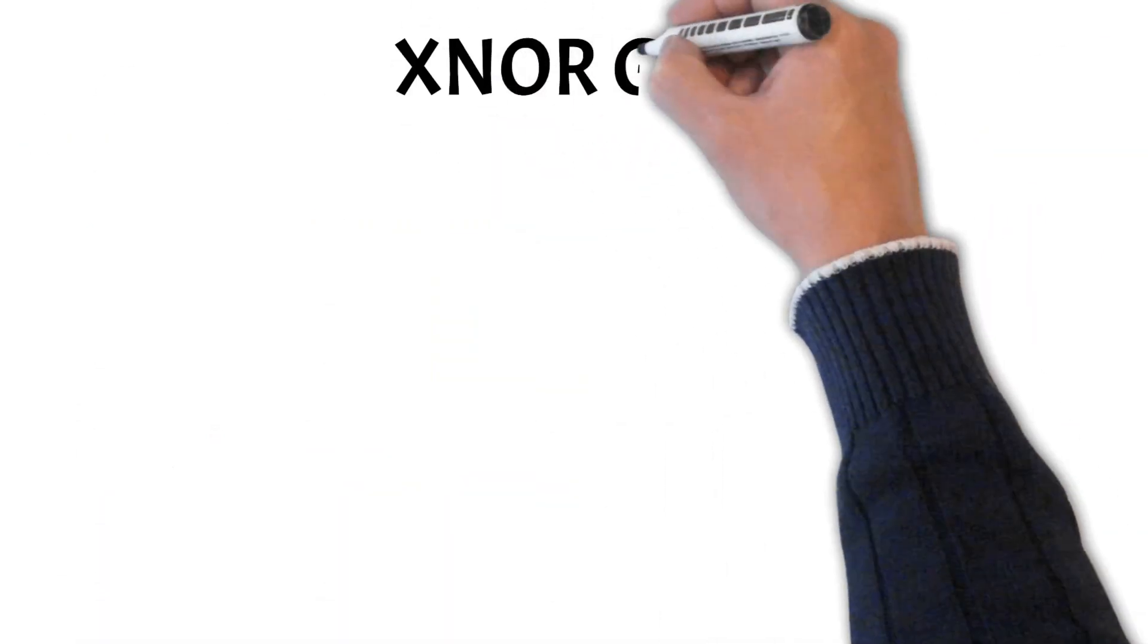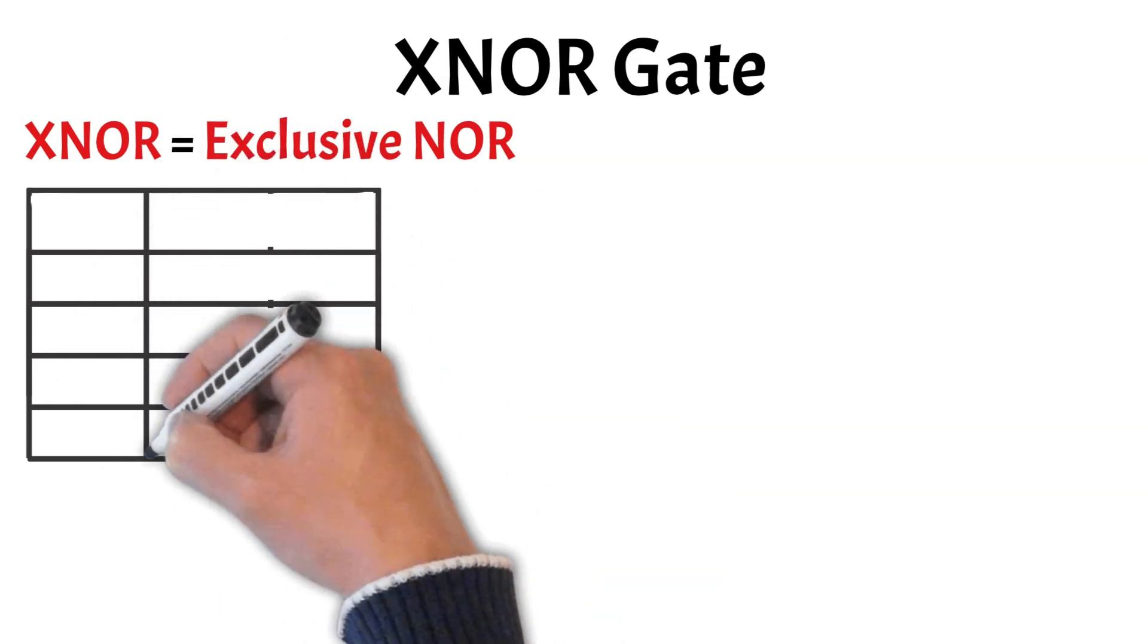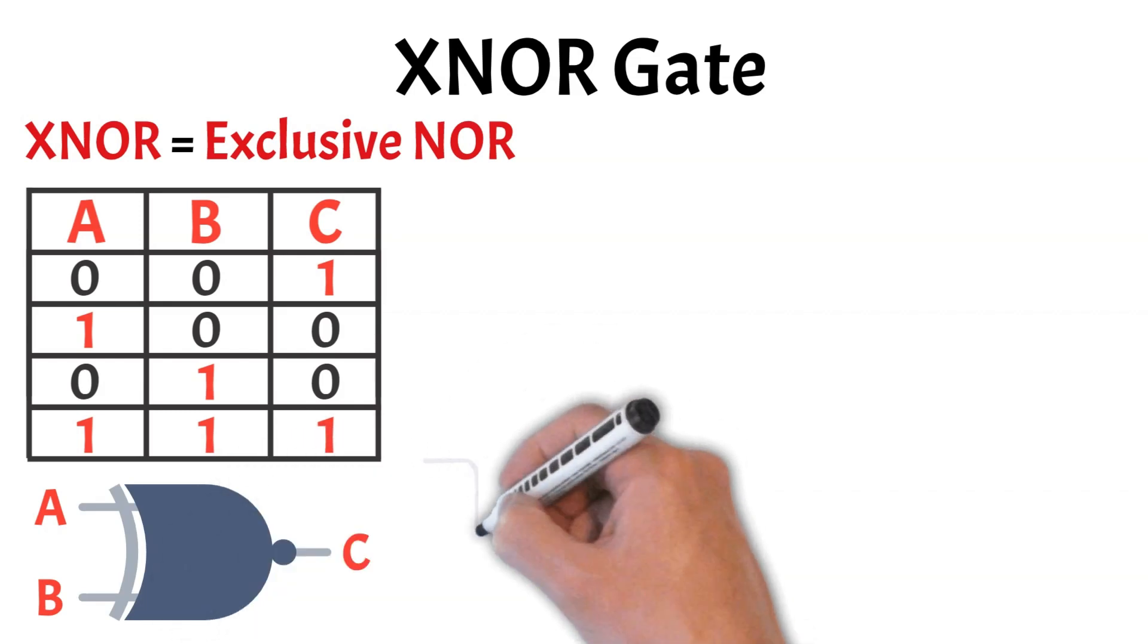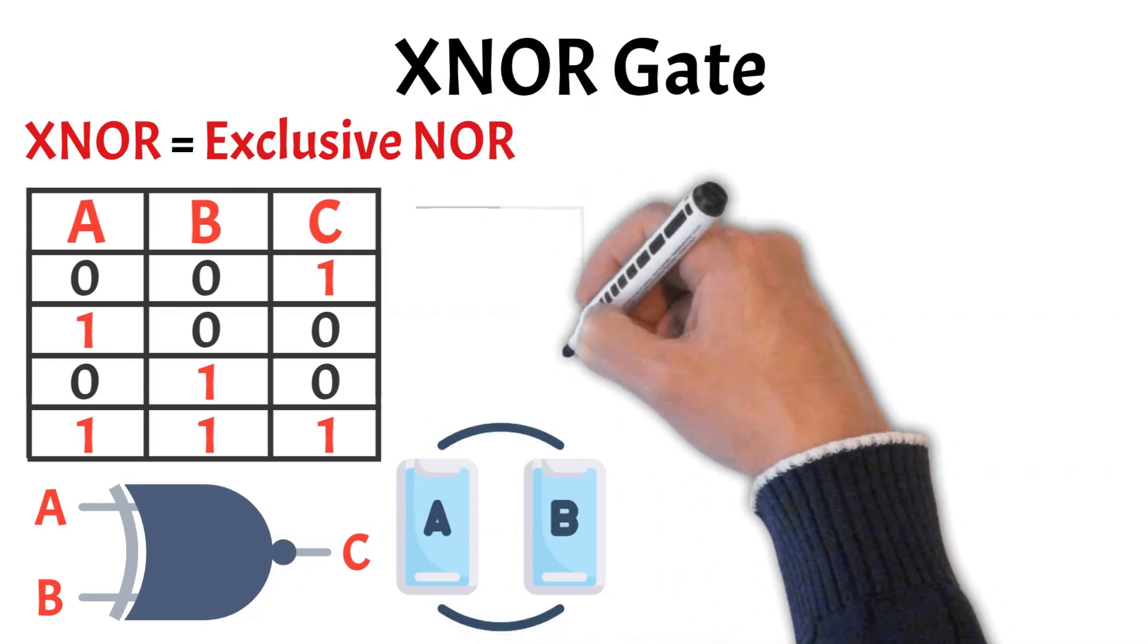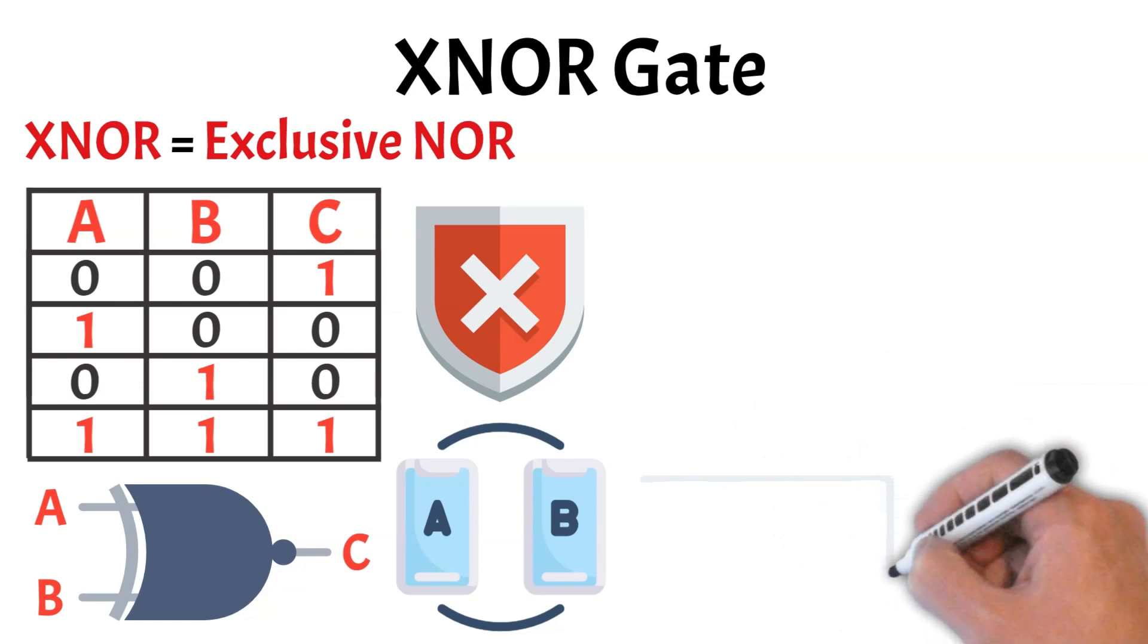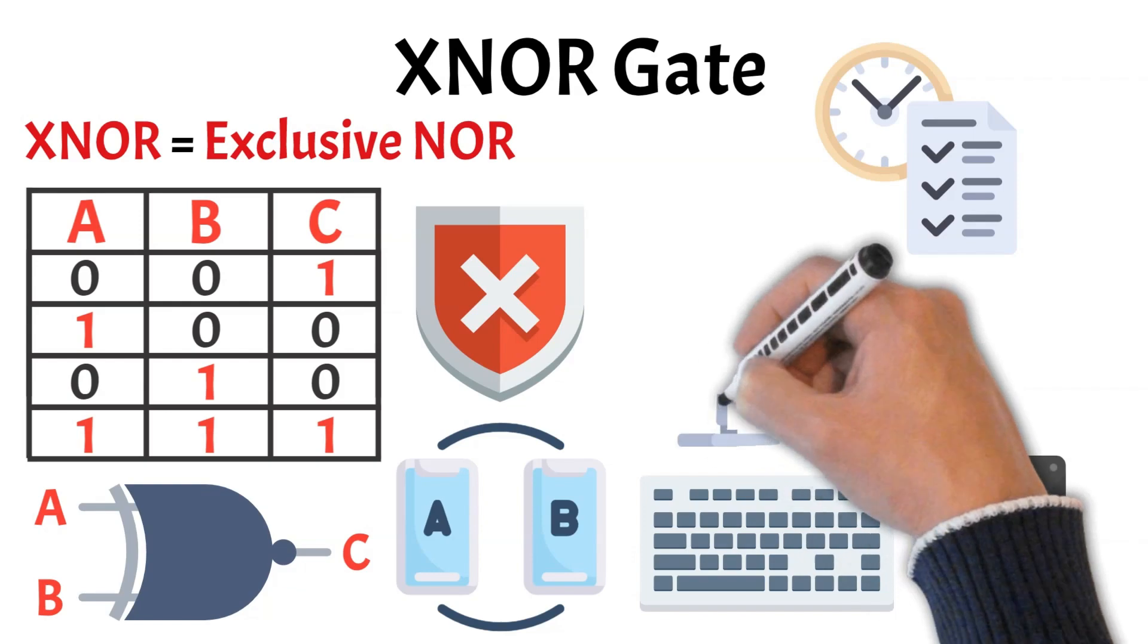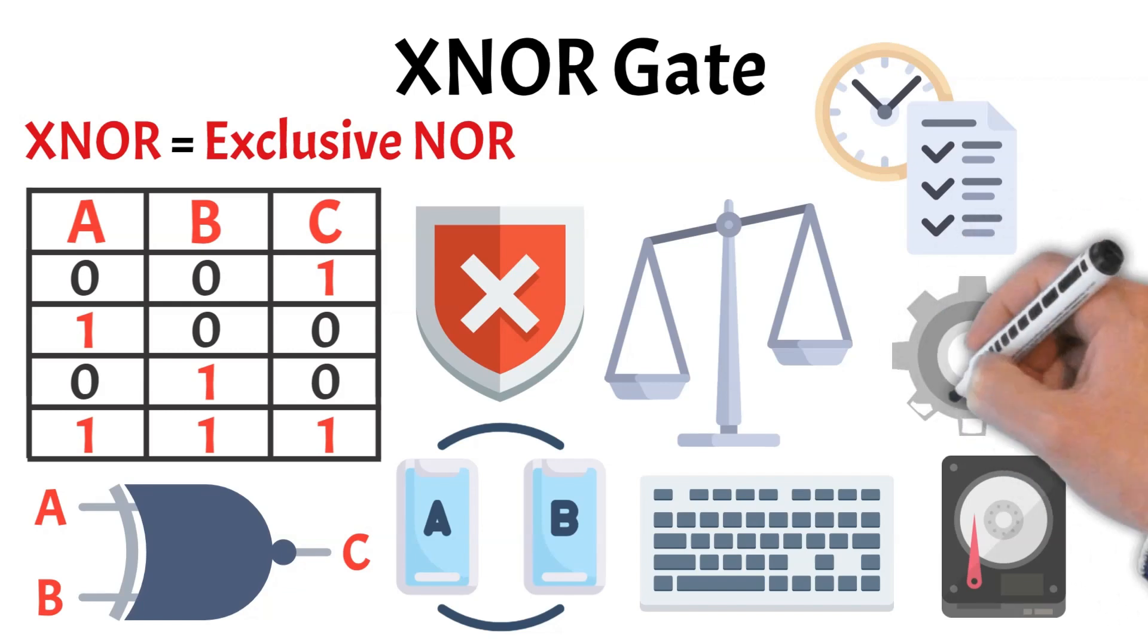Now for the final gate we'll cover in this video, the XNOR gate, also known as the exclusive NOR gate. It's essentially the opposite of the XOR gate. While XOR outputs a one only when the inputs are different, the XNOR gate outputs a one when the inputs are the same. So, if both inputs are zero or both are one, the output is one, otherwise, it's zero. This behavior makes XNOR gates useful in systems that need to detect equality between two binary values, such as digital comparators or error detection mechanisms. In digital security, XNOR logic is sometimes used for bitwise comparison between input and stored data. You can also think of it as a way to confirm that two conditions match. While not as widely used as NAND or NOR, XNOR gates still play a key role in specialized circuits where matching signals or symmetry matters.